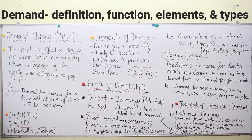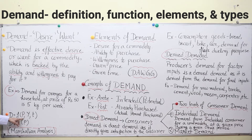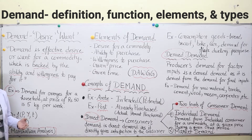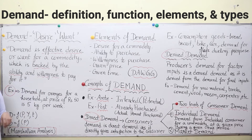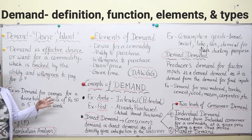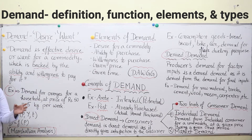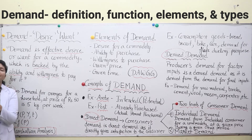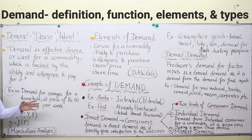Demand depends on certain factors. First is price (P for price), then Y for income, and P for taste. Demand basically depends upon the price of any commodity in question — whether oranges, apples, a bike, a bottle, a Ferrari, a yacht, an aircraft, a pen, a pencil, a notebook, a laptop, a computer — anything you want to purchase.